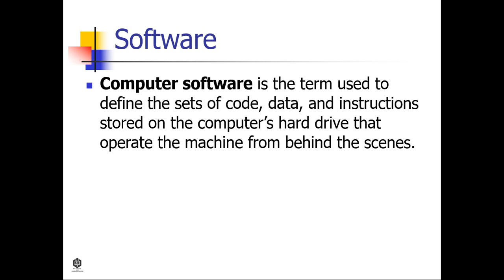Computer software is the term used to define the sets of code, data, and instructions stored on the computer's hardware that operate the machine from behind the scenes. In other words, software allows a computer to actually perform tasks. Without software, computer hardware would be entirely useless. Application software gives functionality to an app, which will then run an operating system within a computer.